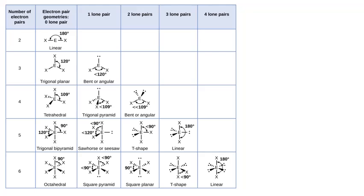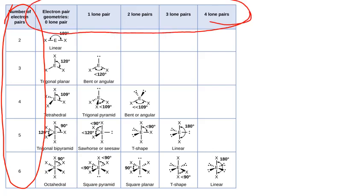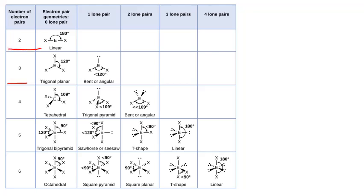This chart represents the interaction between electron geometry — determined from the total number of electron groups on a central atom — and molecular structure, which is determined from the number of lone pairs on that central atom. Each row represents a different electron geometry, a different number of electron groups. What stays consistent across a row is the bond angle. For example, when we look at four electron groups, even though the structures change, the bond angle is all approximately 109 degrees — it does get smaller the more lone pairs we add, but it is still approximately 109.